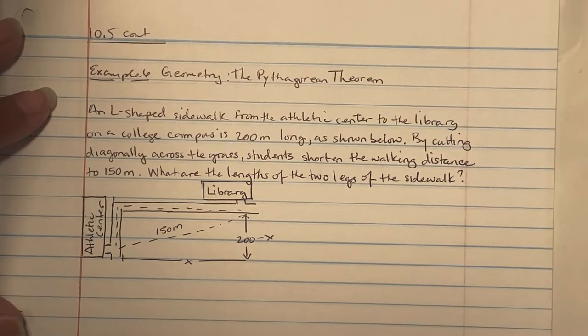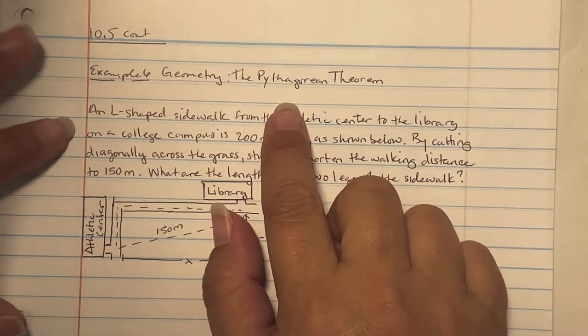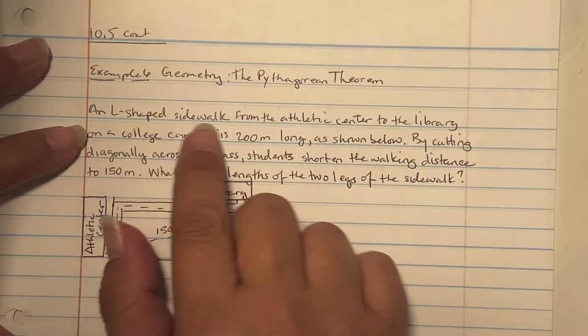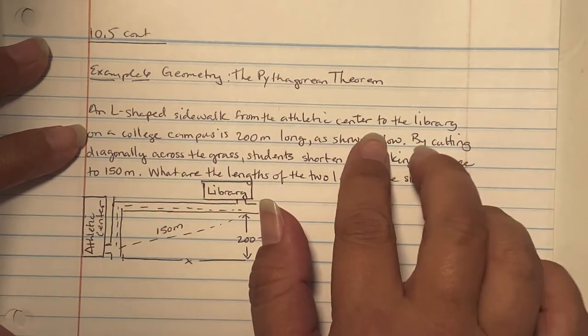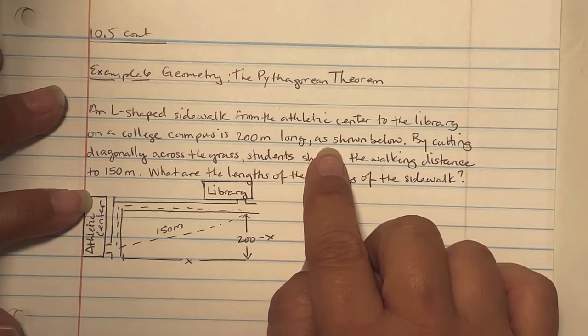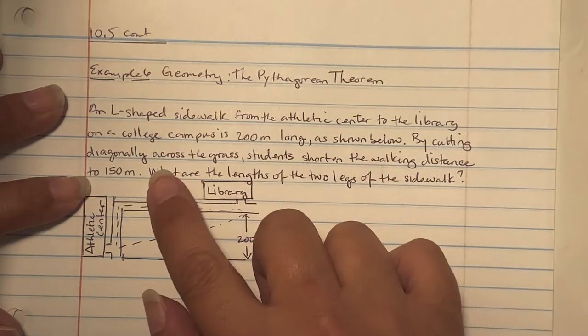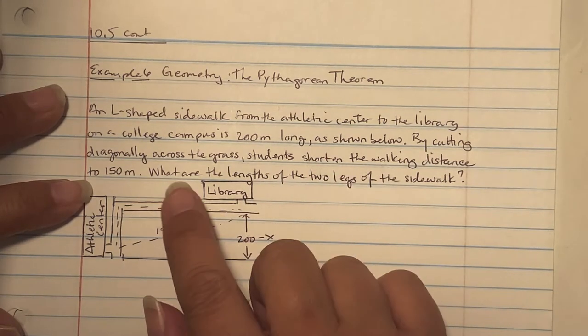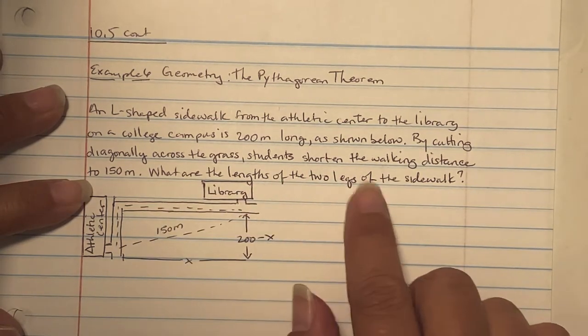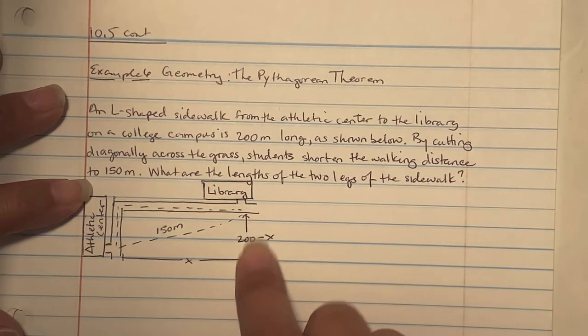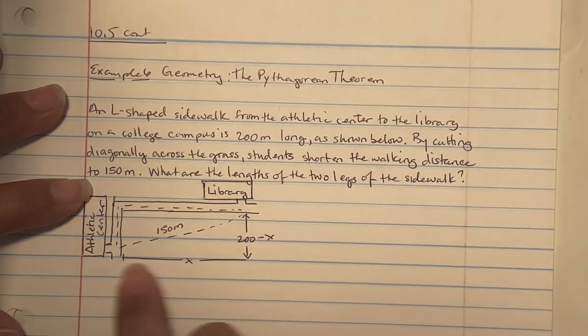Example 6 is another geometry problem using Pythagorean theorem. An L-shaped sidewalk from the athletic center to the library on a college campus is 200 meters long, as shown below. By cutting diagonally across the grass, students shorten the walking distance to 150 meters. What are the lengths of the two legs of the sidewalk? From here to here, we have 200 minus X, because X is what we have here. They gave you the diagonal is 150.